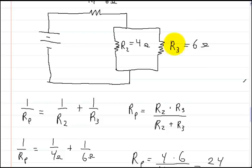In parallel, since you're increasing the pathways that the electrons can flow through, you're making it easier for them to flow through these two branches. And that's why it's a reciprocal formula.